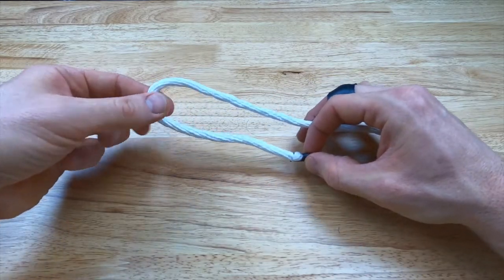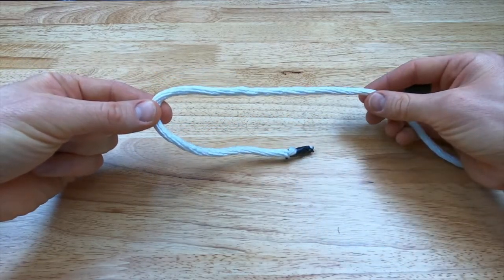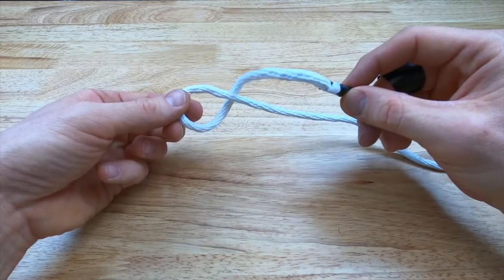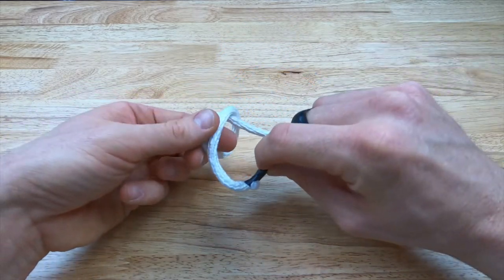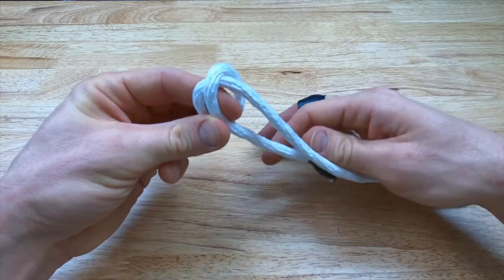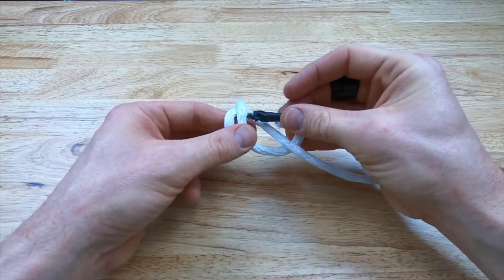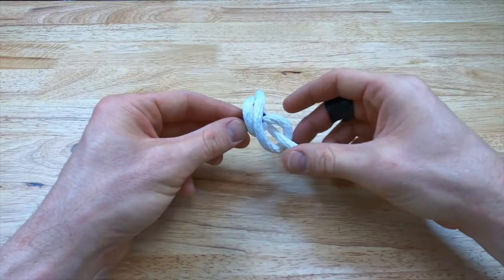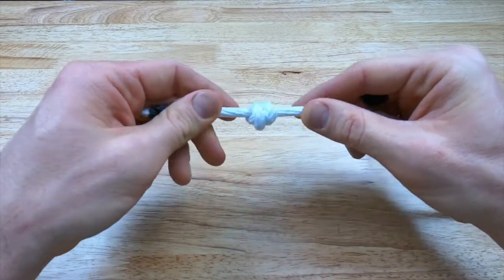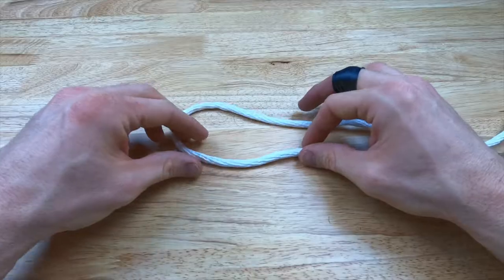Start by taking the running end of your rope and pinching where you want the barrel knot to be. Take the running end and wrap it behind the standing end to create a second loop. Pinch both with your fingers and then take the running end behind the standing end one more time and go through the two loops that you just created. Pull the knot tight, dress it, and there's your barrel knot.